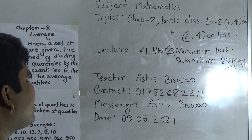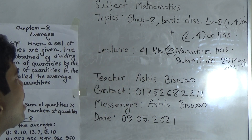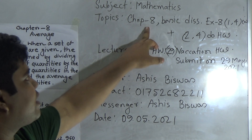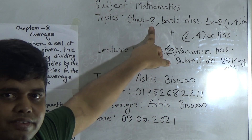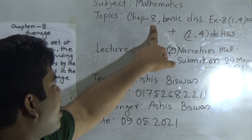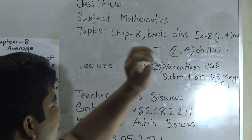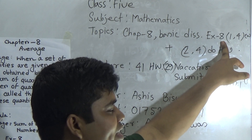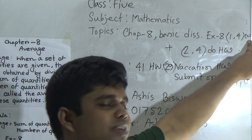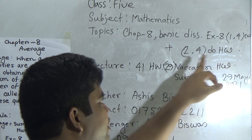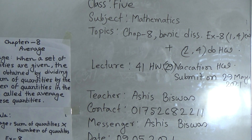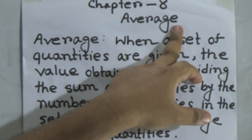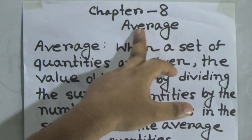Let us start our class. Today's topic is Chapter 8. The name of the chapter is Average. In this chapter, we shall solve today's basic discussion and Exercise 8. From Exercise 8, we shall solve questions 1 and 4 as classwork, and questions 2 and 4 will be your seatwork. Chapter 8 — Average.